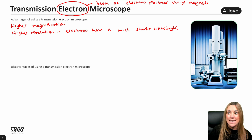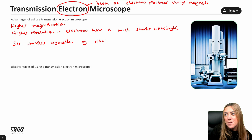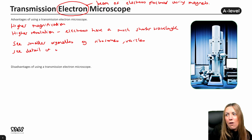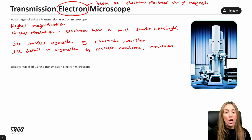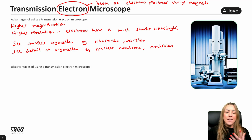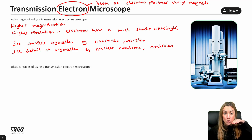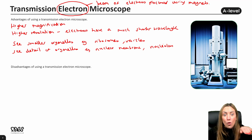Other advantages: you can see smaller organelles — for example, ribosomes, vesicles, and lysosomes — and you can see detail of those organelles. Going back to the nucleus as an example, you can see the nuclear membrane (the double membrane) and the nucleolus. You can even see the cristae inside the mitochondria, the thylakoid discs, and the grana inside the chloroplasts. This is specific to the transmission electron microscope because the electrons pass through the specimen, so you are looking at the inside details of the cell — the subcellular structures and organelles within.